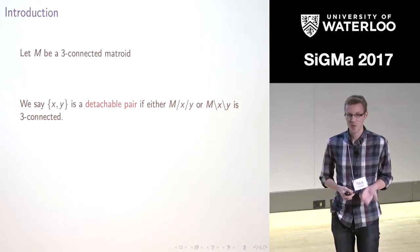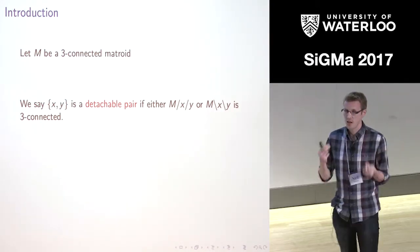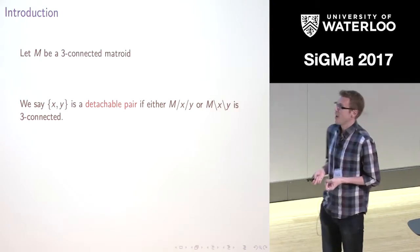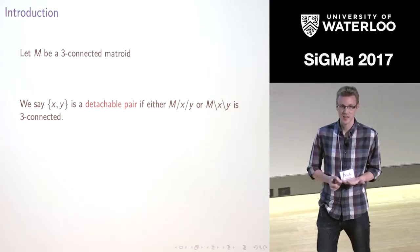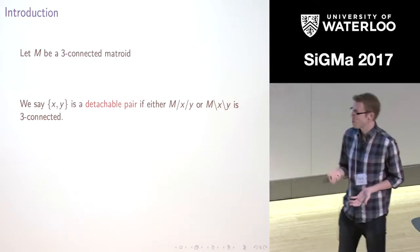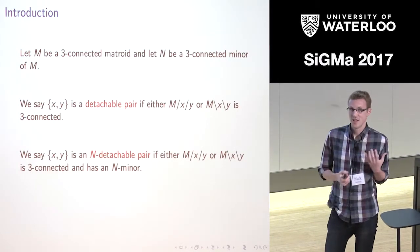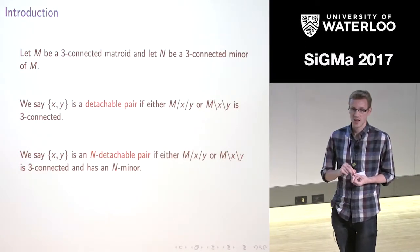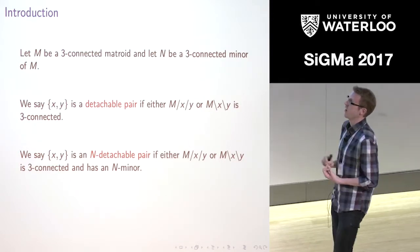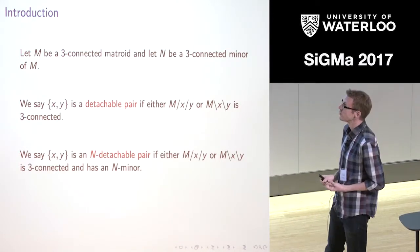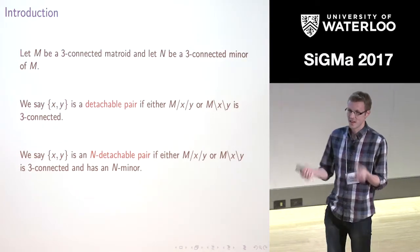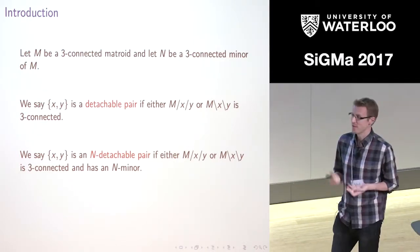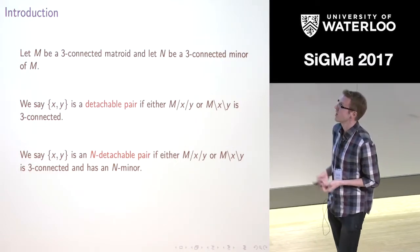I can now define what a detachable pair is. A detachable pair is a pair of elements such that if you delete both or contract both, you stay three-connected. The main result I want to present is a splitter-type theorem for detachable pairs. If we have some three-connected minor N, then an N-detachable pair is such a pair where we delete both or contract both, keep three-connectivity, and keep an isomorphic copy of that N minor. We're not happy deleting one element and contracting one — we have to delete both or contract both, and we're talking about vanilla three-connectivity, not up to simplification or co-simplification.